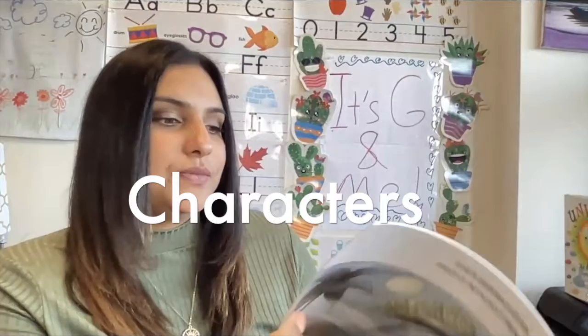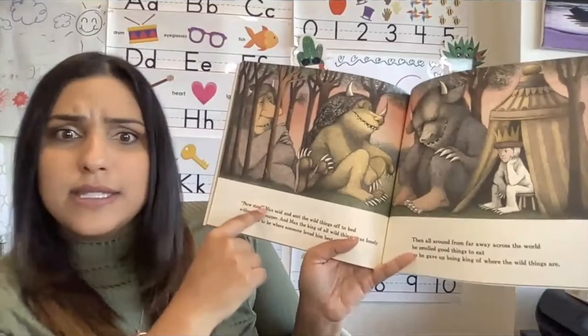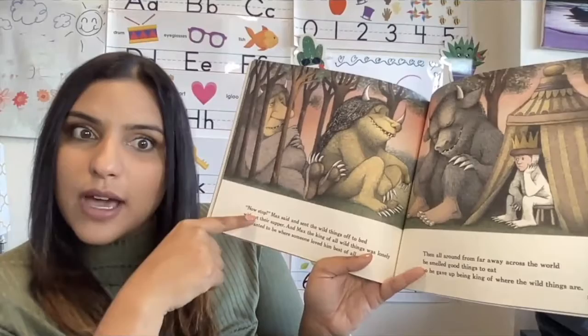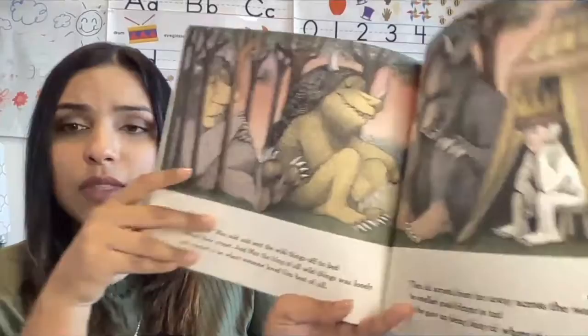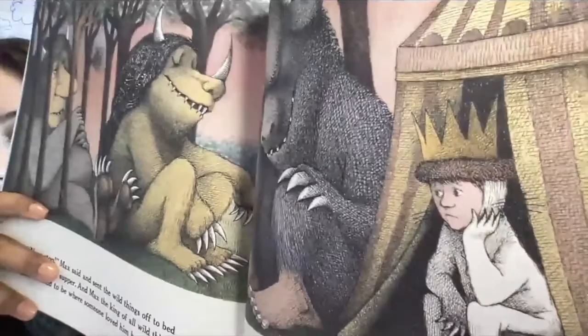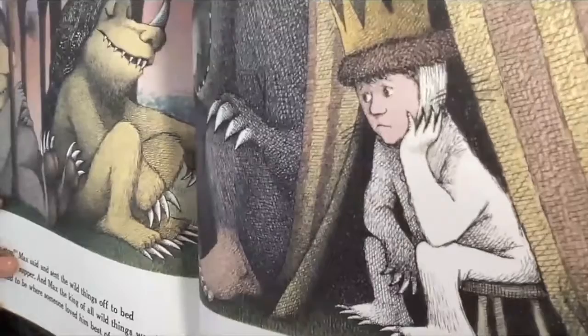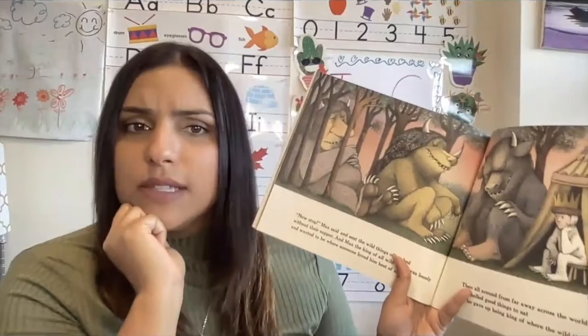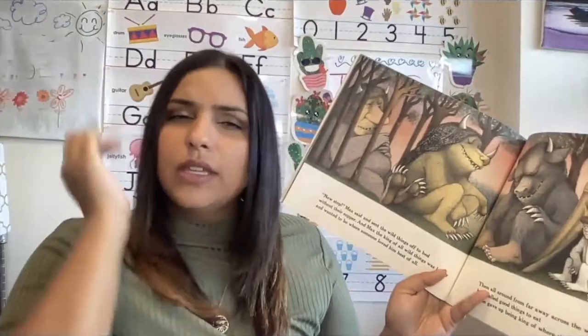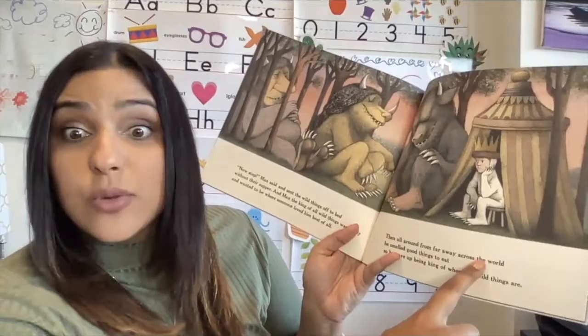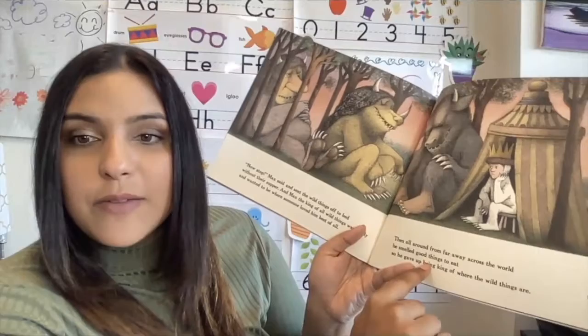This rumpus is finally done. Now stop, Max said, and sent the wild things off to bed without their supper. And Max, the king of all wild things, was lonely and wanted to be where someone loved him best of all. The word said he was lonely, and the picture shows him sad and upset. Then all around, from far away across the world, he smelled good things to eat. And he gave up being king of where the wild things are.